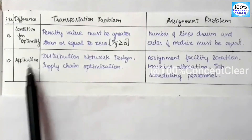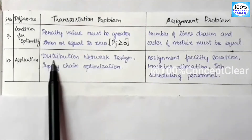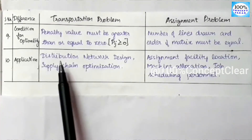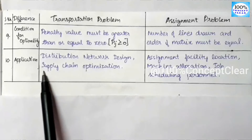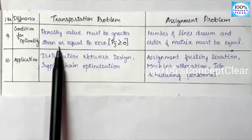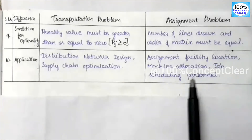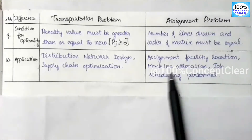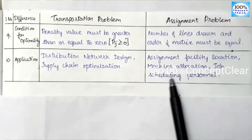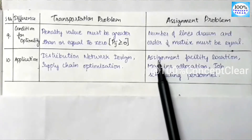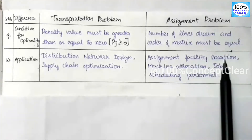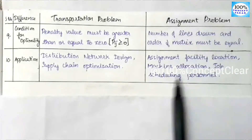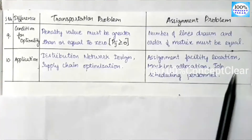The 10th point is application. The transportation problem is used in distribution network design and supply chain optimization. The assignment problem is used in facility location, machine allocation, job scheduling, and personnel assignment.